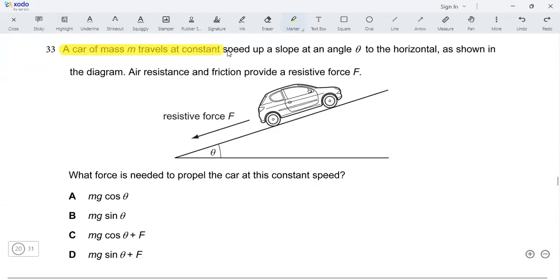A car of mass m travels at a constant speed up a slope at an angle theta to the horizontal as shown in the diagram. Air resistance and friction provide a resistive force F. What force is needed to propel the car at this constant speed?